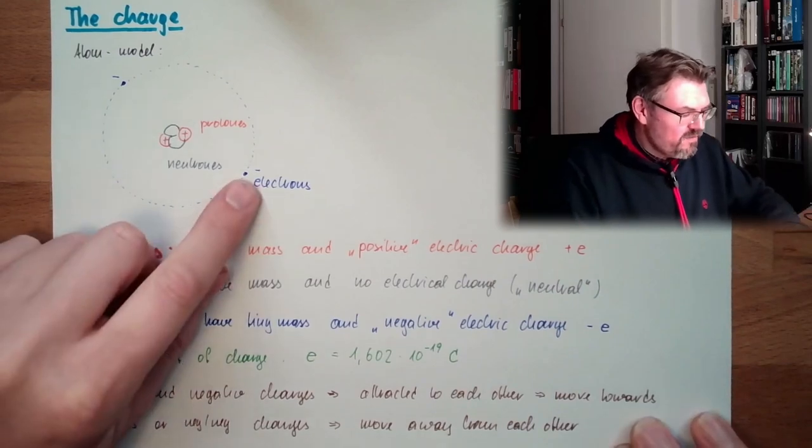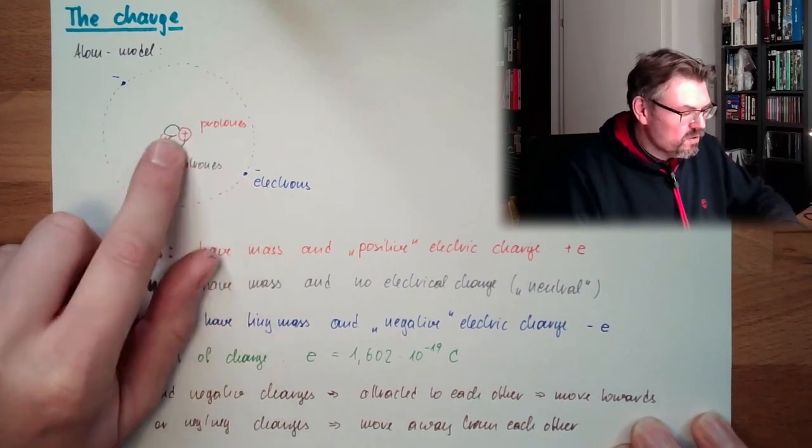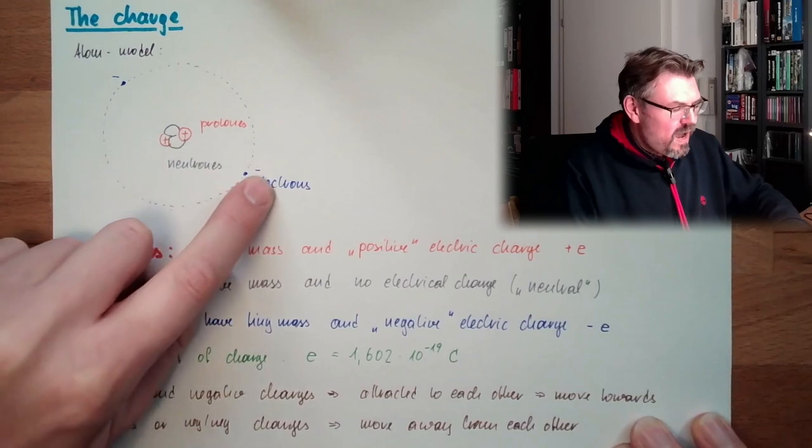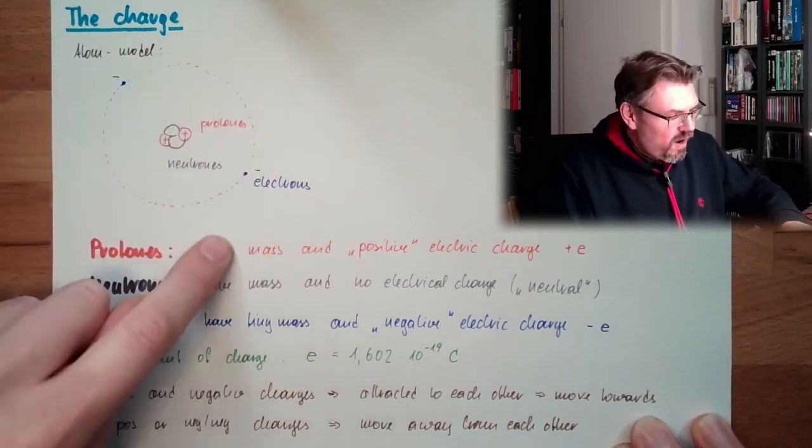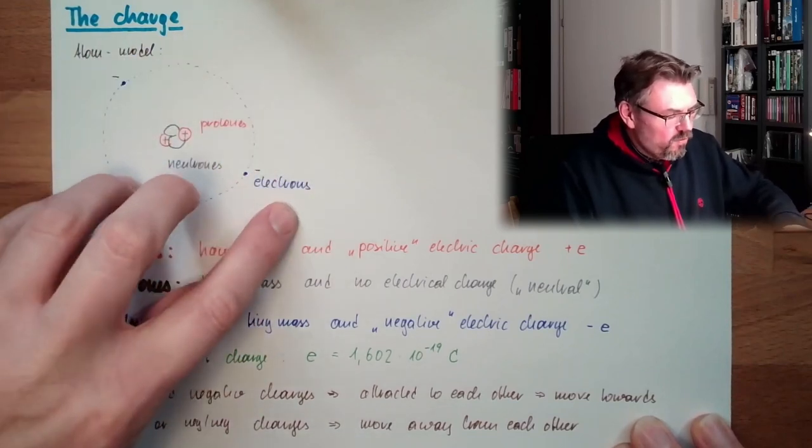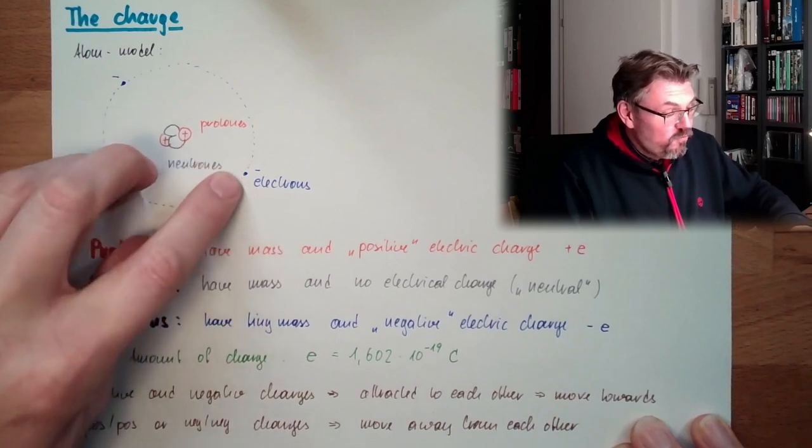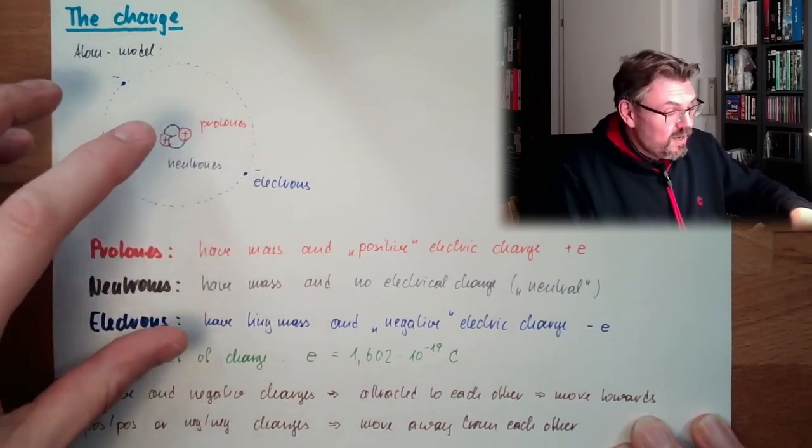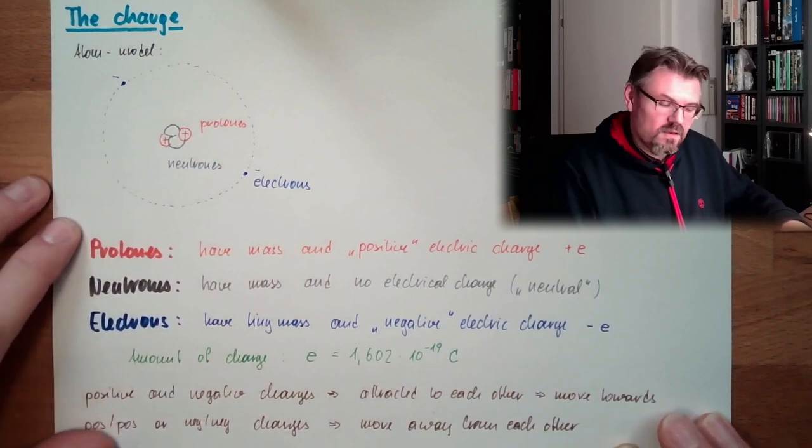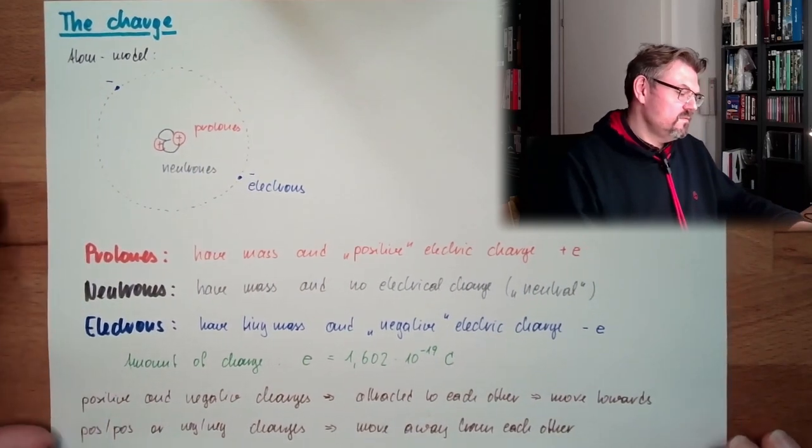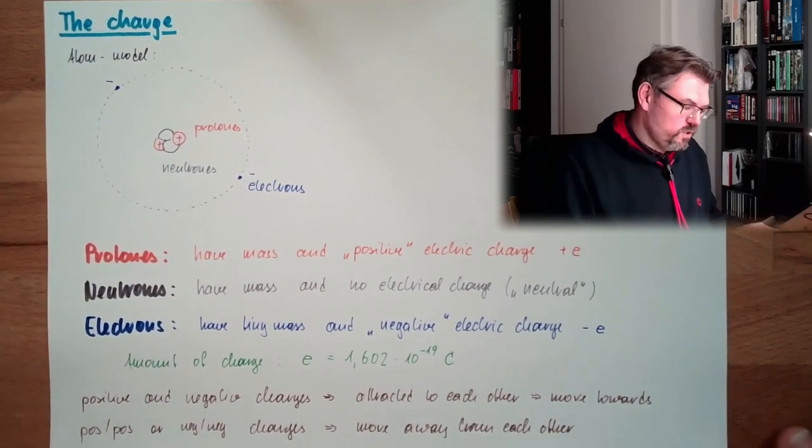And the electrons, they feel attracted to the protons. They want to rush to the protons. And they have a lot of speed around, so they have a centrifugal force. And they have this attraction force to the protons. And so they are constantly moving. Like planets around the sun but much faster.